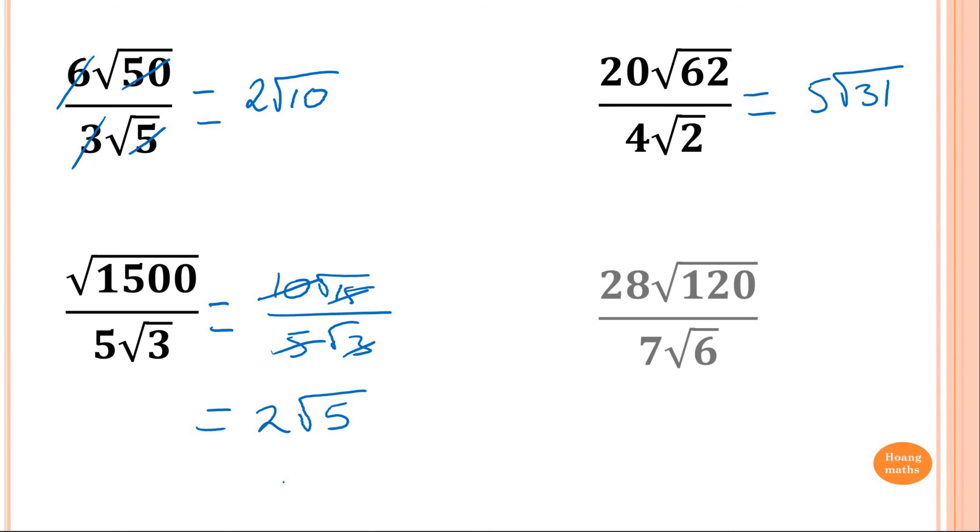So this one here. Let's do the last one. 28 square root of 120 divided by 7 root 6. Now, what you need to do is simplify it first. So it's the same thing. So what I do, I simplify 28 and 7 first. So 28 divided by 7 is 4. Now, 120 divided by 6. It's just like, think about it. 12 divided by 6. You ignore the 0 first.